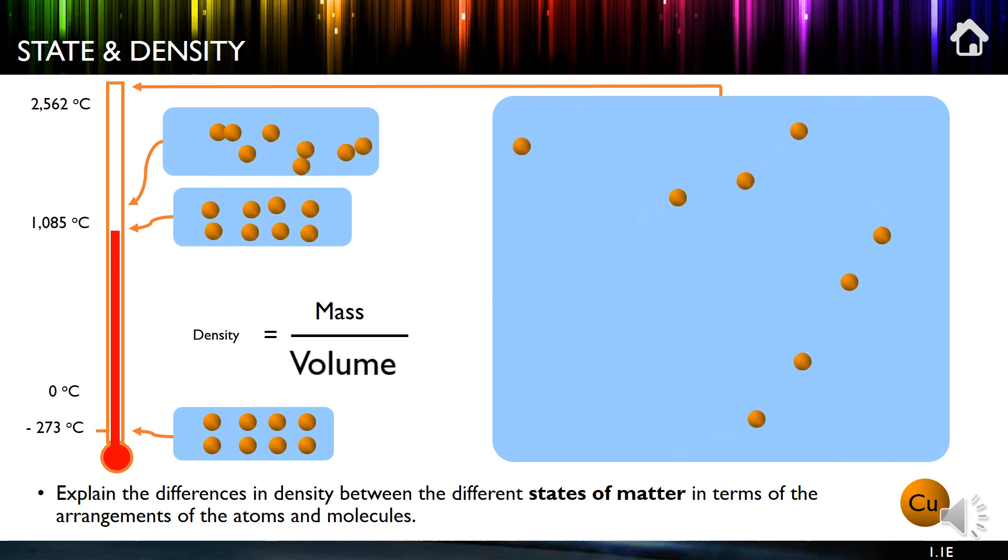So here we move on to state and density. If we start down here at minus 273, nothing moves and it has maximum density. As we heat things up, they move more and they occupy more volume. We can see that with our blue triangles here—rectangles, I should say. And finally, the gas state is very, very much bigger, occupies a much larger volume, and therefore has a much lower density.